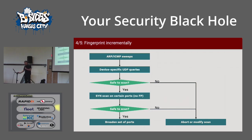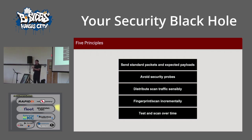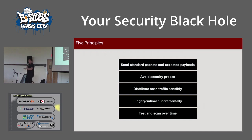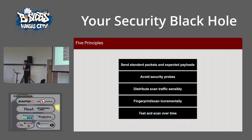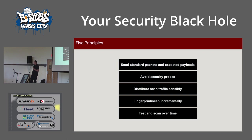The last and probably most important principle — also the least well-implemented because it has nothing to do with code, it's all about people — is: test and scan over time. Also known as 'don't be stupid.' Identify your OT sites, look for commonality, find overall categorization of devices, and then build that inventory slowly and small, then build it out over time. Those are the five principles of active scanning in OT — it's a minority opinion and not something people do often, but it can work and it has worked.